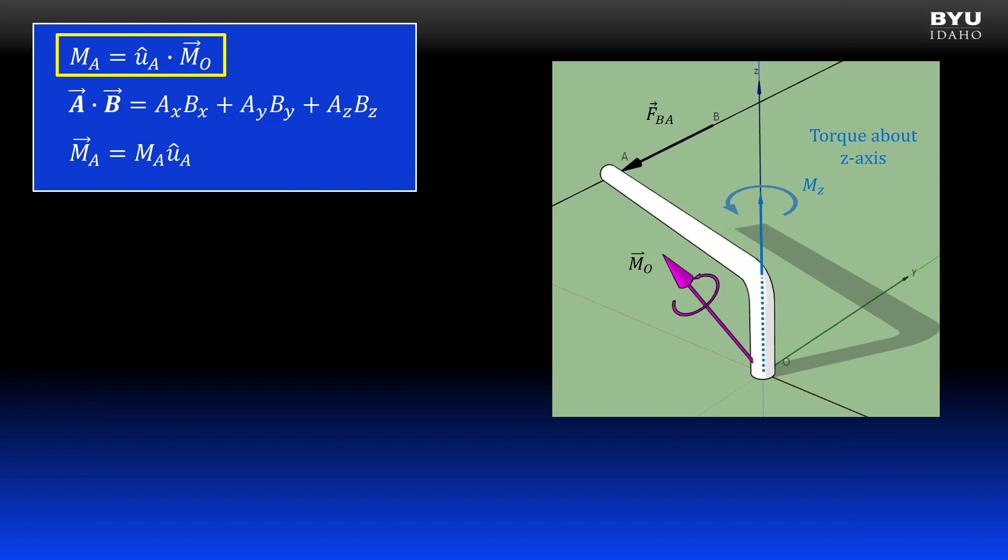So let's project the moment vector onto the Z axis so that we can find the torque at the support. We will use the dot product. We find the magnitude of the moment about the Z axis by dotting a unit vector in the Z direction with our moment vector. Here is a unit vector for the Z axis: 0i, 0j, and 1k.